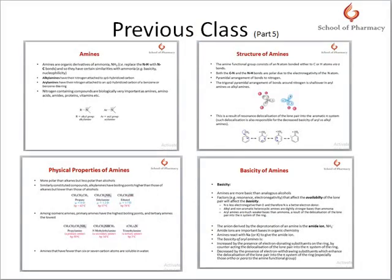In the previous class, Part 5, we discussed amines. Amines are derivatives of ammonia in which there is a replacement of the N-H with the N-C bond. There are two types: alkylamines and arylamines. When an aromatic ring is bonded with the amine it is known as arylamine; when an alkyl group is attached it is known as alkylamine.